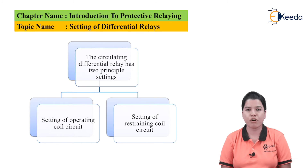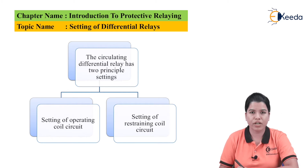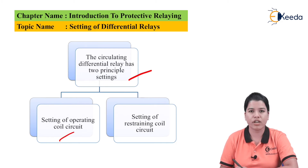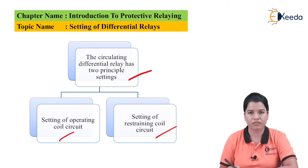The two most important parts of the differential relay are operating coil and restraining coil. Setting of these two parts is very important. The circulating differential relay has two principal settings: first, setting of operating coil circuit; second, setting of restraining coil circuit.